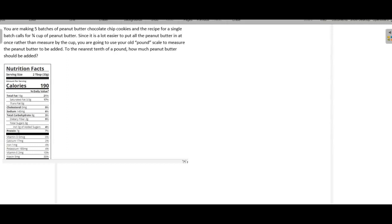Now we're going to look at an alternative way of measuring something. For example, here you are making five batches of peanut butter chocolate chip cookies.